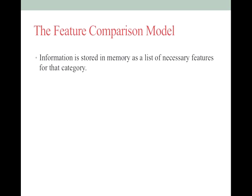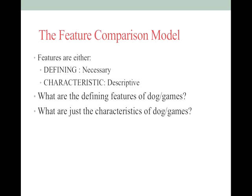The feature comparison model argues that information is stored in memory as a list of necessary — be sure you get the word 'necessary' — features for that category. It's basically a checklist model. Does it have a tail, fur, and does it bark? It must be a dog. Check, check, check. But people aren't perfect at this.